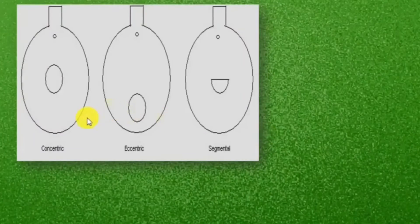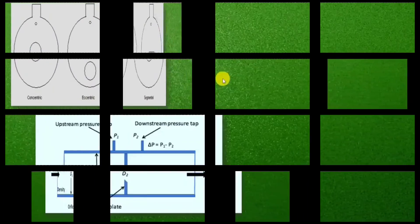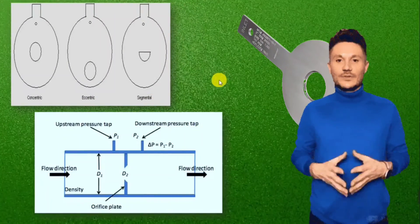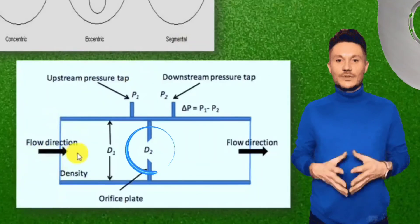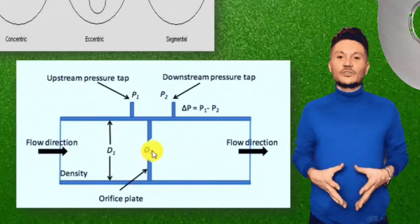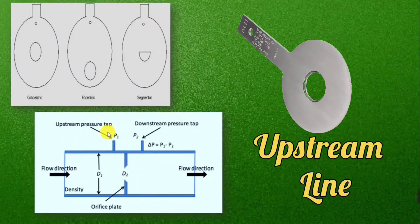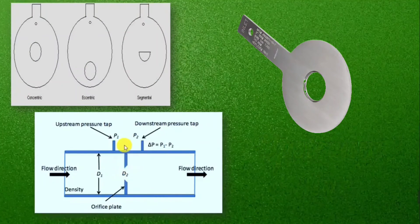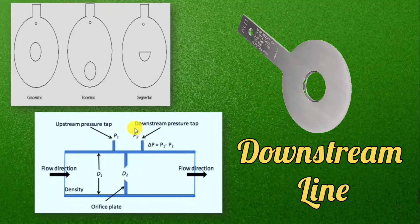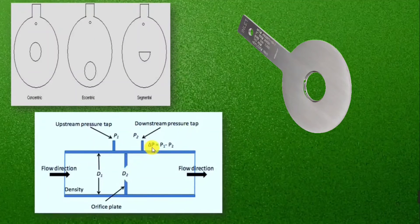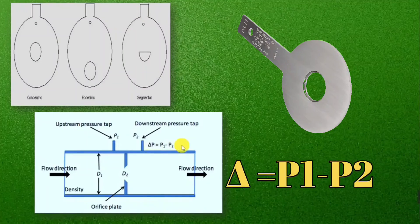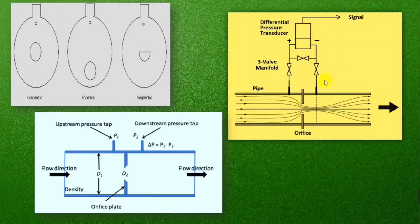In this image, some types of orifice plate are shown — like concentric, eccentric, and segmental. Here you will also understand the use of a flow orifice. This flow orifice is installed in a pipeline. Suppose the diameter of the pipeline is D1 and the diameter of the flow orifice is D2. The pipeline before the orifice plate is the upstream line — suppose pressure here is P1. The pipeline after the orifice plate is the downstream line — suppose pressure here is P2. The pressure difference between them is P1 minus P2, denoted by delta P in this image. An arrangement is shown with a three-valve manifold.